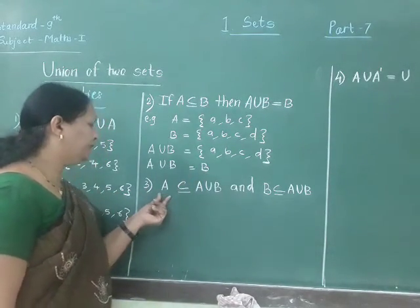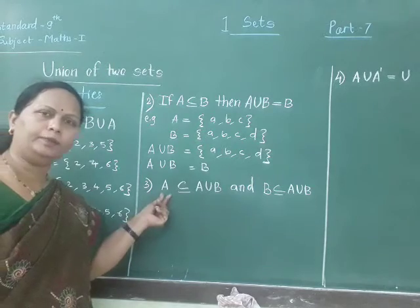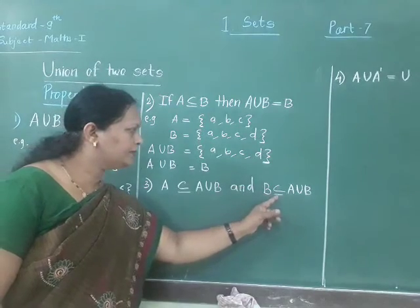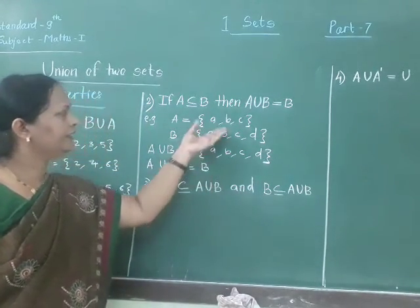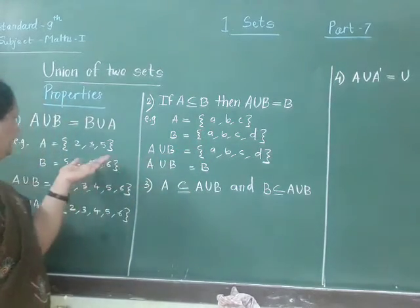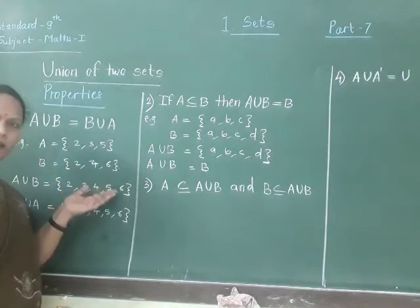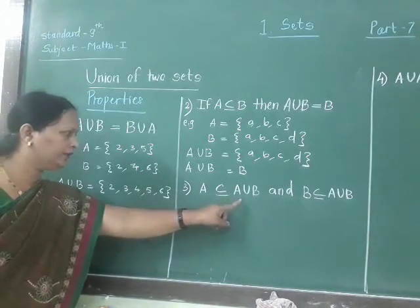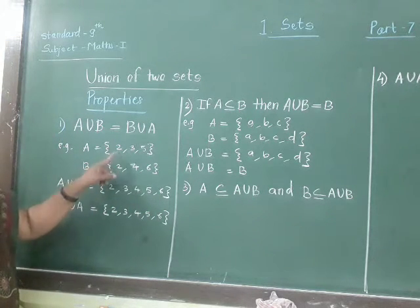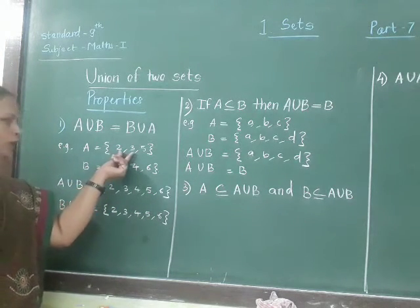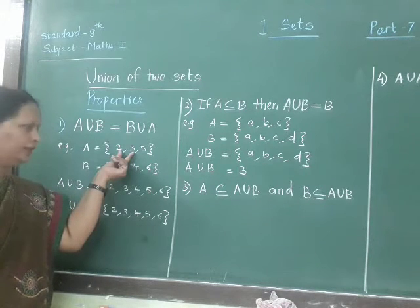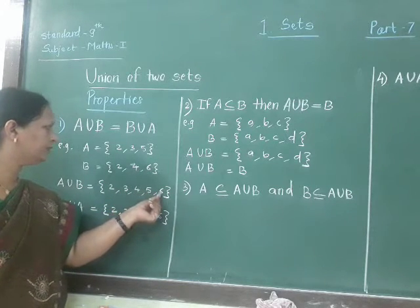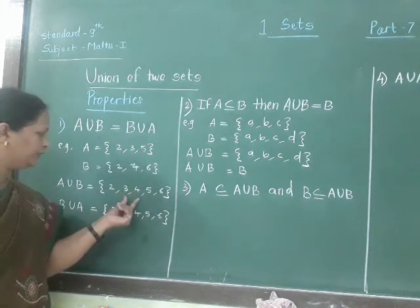Now see the third property: A is the subset of A union B, and also B is the subset of A union B. For example, if set A contains the elements 2, 3 and 5, and A union B contains the elements 2, 3, 4, 5 and 6, then here A is the subset of A union B.